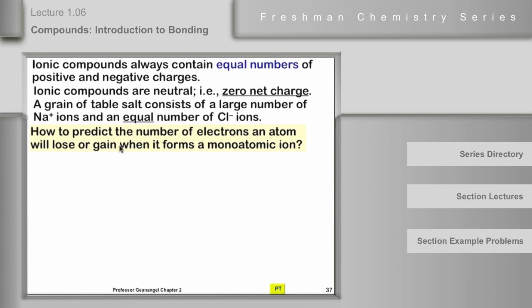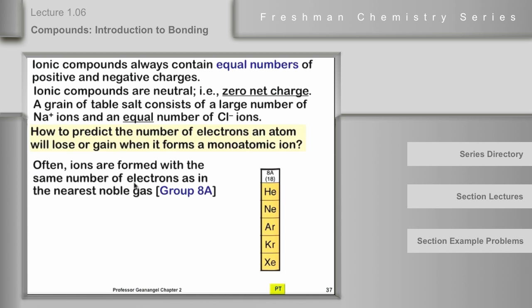So we come to a question. How is it that we're going to find out what number of electrons an atom will lose or gain when it forms a monatomic ion? The answer to that is twofold. In some cases, we'll simply have to memorize the charge on the ion that it forms. In other cases, especially for main group metals and some main group nonmetals, we will be able to predict it from using the periodic table. So I want to focus on that.